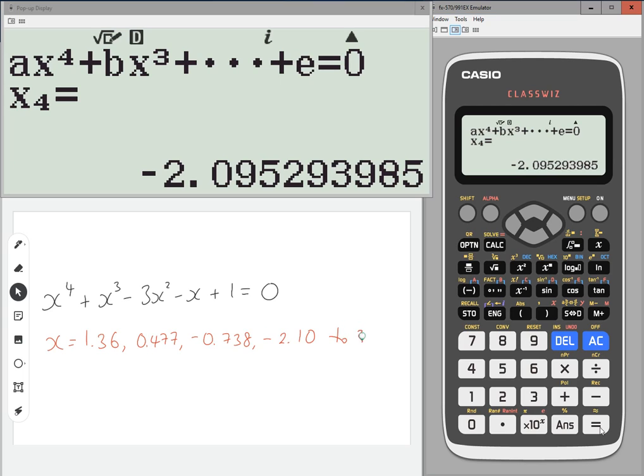All to three significant figures. These are the four solutions to this quartic equation, or in other words, the four values of x where this quartic crosses the x-axis.